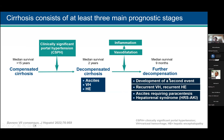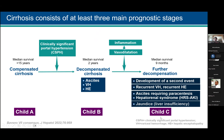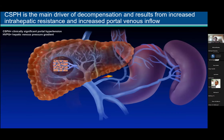The main driver of further decompensation is an inflammatory and vasodilatory state that affects these patients. Jaundice is also part of further decompensation — it has nothing to do with inflammation and vasodilation, but we include it because it indicates that the liver is not working anymore. In general terms, Child A patients are compensated, Child B patients are decompensated, Child C patients are further decompensated, and any calculator can give you the Child class.